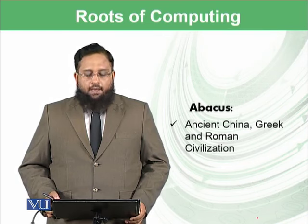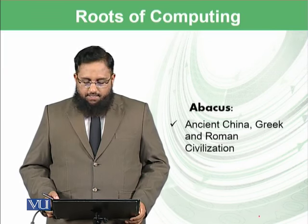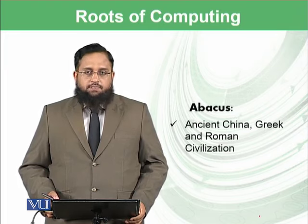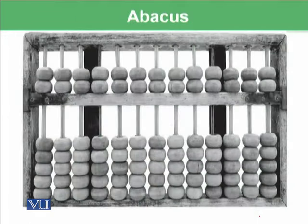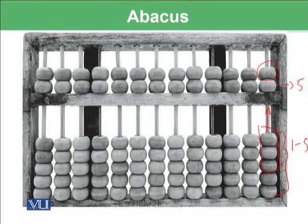One of the early computers found in history is known as the Abacus, which has roots in ancient China, Greek, and Roman civilization. This is a picture of the Abacus used to store data. It has small bits — each bit represents a number. The lower bits represent one to five and the upper bits represent five. If you want to represent three, you move three bits upward. This was one of the early concepts of storing data.